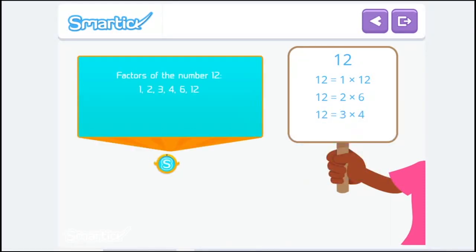When the factors start repeating, it means that we've found them all. 1, 2, 3, 4, 6, and 12 are the factors of 12.